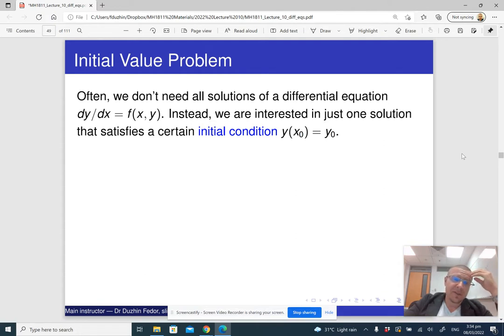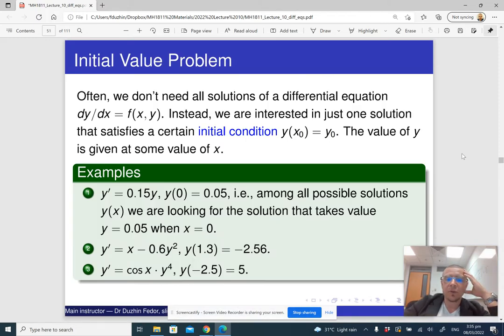Now, but usually we don't really want to know those infinitely many solutions. And instead, we usually are interested in just one solution that satisfies a certain initial condition. So it means that we are given a specific value of X and to that specific value of X, it corresponds a specific value of Y. So here are a few examples.